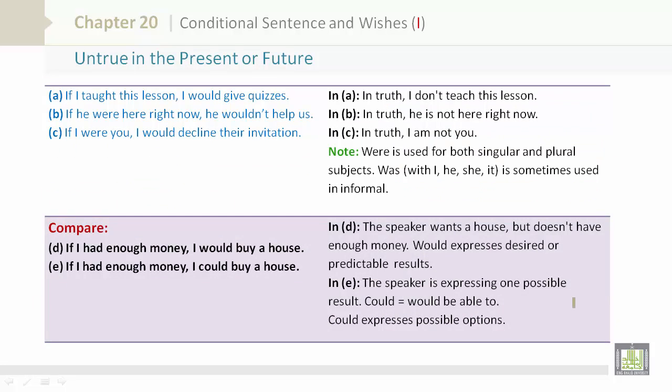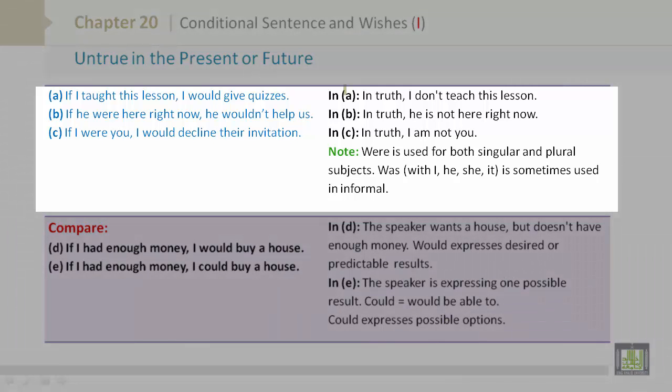Untrue in the present or future. Let's look at example A: If I taught this lesson, I would give quizzes. In truth, I don't teach this lesson now. Let's look at B: If he were here right now, he wouldn't help us. In truth, he is not here right now. C: If I were you, I would decline their invitation. In truth, I am not you.